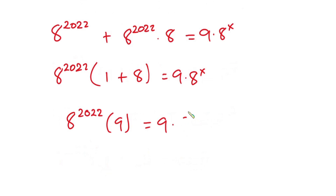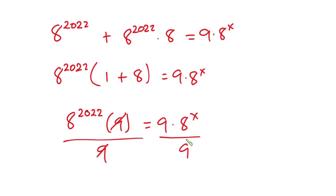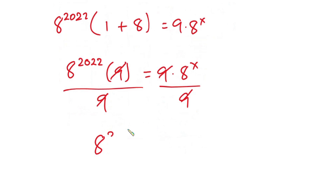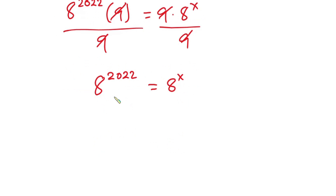Let's go ahead and divide each side of the equation by 9, so the 9s cancel on both sides. We have a to the power 2022 is equal to a to the power x. Since the bases are equal, we just equate the exponents, so x is equal to 2022. That is our final answer.